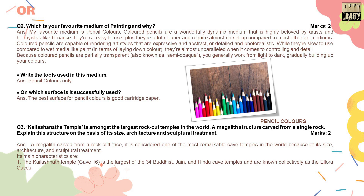Question number three is on Kailashnath Temple. You have to explain its structure on the basis of its size, architecture, and spiritual treatment. In other words, you have to write the main characteristic features of Kailashnath Temple of Elora.